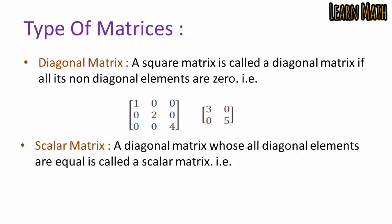A scalar matrix is a diagonal matrix whose all diagonal elements are equal. For example, the matrix [3, 0, 0; 0, 3, 0; 0, 0, 3] has all diagonal elements equal to 3 (or 5 equal to 5 in another example), so this type of matrix is called a scalar matrix.